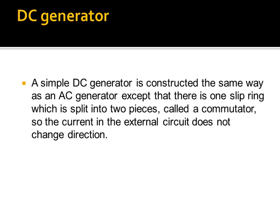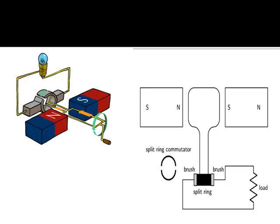الـ One Slip Ring، كانت عندنا حلقة كاملة نجمع بها التيار ونأخذه منها، يعني البراش راح تكون بالتماس معها وتجهز الدائرة الخارجية. سوينا Split into two pieces، قسمنا هاي الحلقة إلى نصفين، نصيح لها الـ Commutator أو الجامع. So the current in the external circuit does not change direction، إذن الـ Commutator اللي راح يجمع التيار باتجاه واحد ويجهز الدائرة الخارجية.